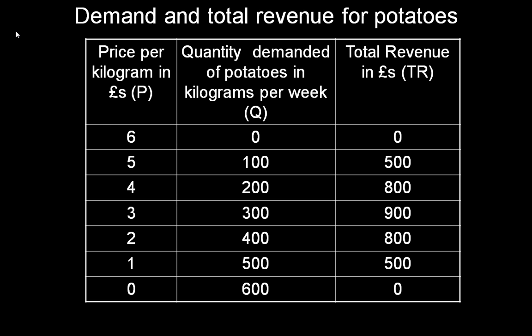In the table, we have the elements of a demand curve faced by Spuds R Us. The price and quantity columns reflect the basic law of demand. At a price of £6, there is a zero quantity of potatoes demanded per week. As price falls to £5, the quantity demanded increases to 100kg per week. At a price of £4, quantity demanded is 200kg, and so on, until at a price of zero, that is giving it away, the maximum quantity demanded is 600kg.